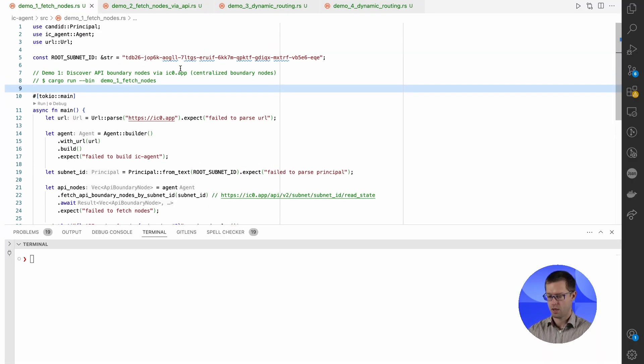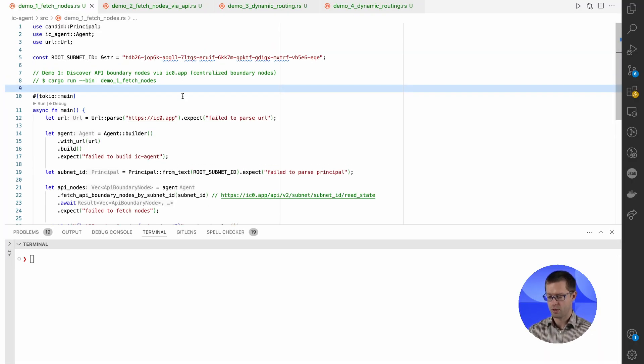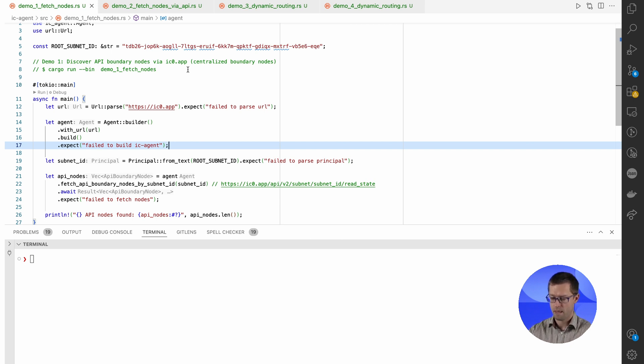So here we are in the Visual Studio Code editor with a minimal Rust program to talk to the internet computer. We instantiate Agent instance, which is a standard component to talk to the internet computer. We provide a routing URL, which is ic0.app, and it means we will do the request via centralized boundary nodes. And we will do a read state call to fetch all existing API boundary nodes from the state tree. Let's take this for a spin.